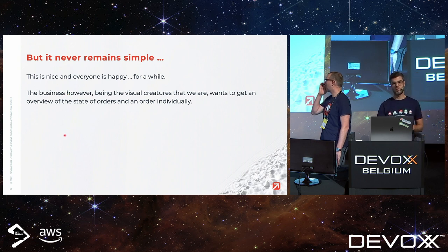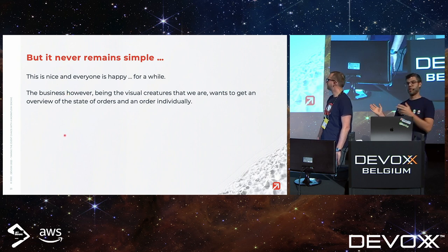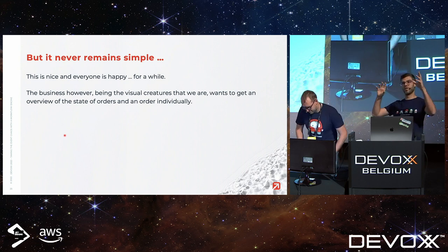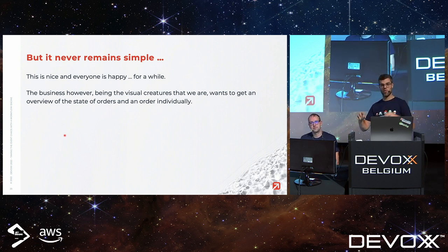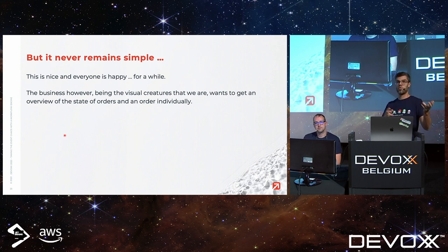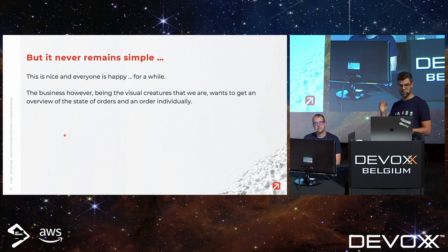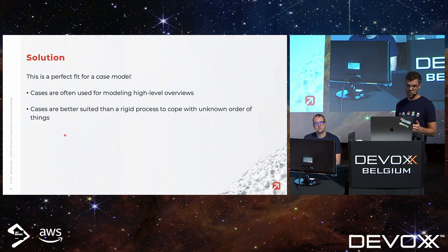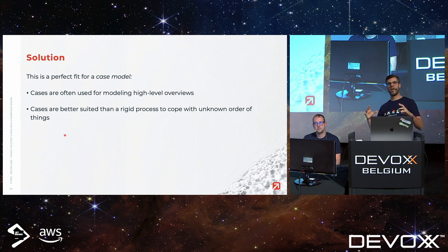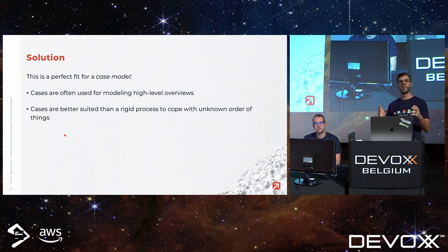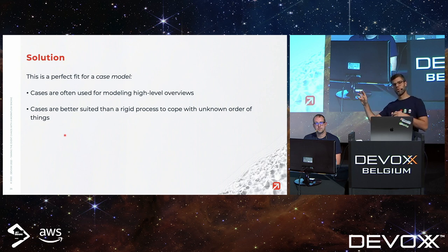We have this system but businesses want to understand it — as visual creatures, we want to see pictures and things moving on screen. We want to see when an order is created, validated, shipped, and so on. One solution we have for this is our case models, which provide a high-level overview of a particular thing — in this case, an order — showing everything that happens to it.